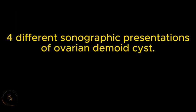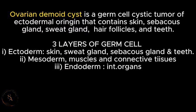Today we are going to talk about the different sonographic presentations of ovarian dermoid cysts. An ovarian dermoid cyst is a germ cell tumor of endodermal origin that contains skin, sweat glands, sebaceous glands, hair, and teeth.